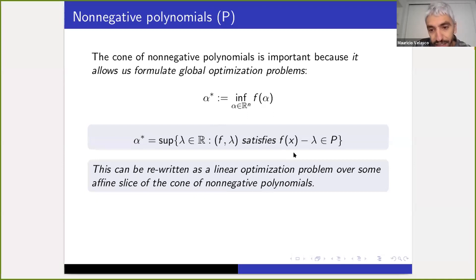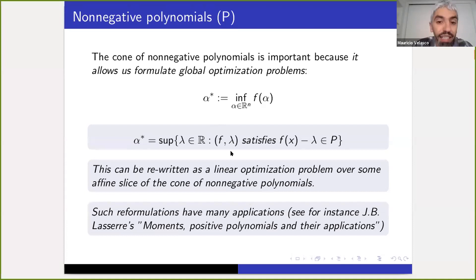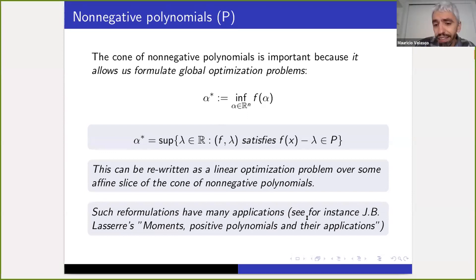This reformulation is useful not only for rewriting the question, but also for solving it, and there are many, many applications to this idea. I recommend Lasserre's book 'Moments, Positive Polynomials and Their Applications,' where he discusses how these ideas are used in probability, statistics, control theory, game theory, automated theorem proving, and many other areas. So P is important because it allows us to model interesting problems.